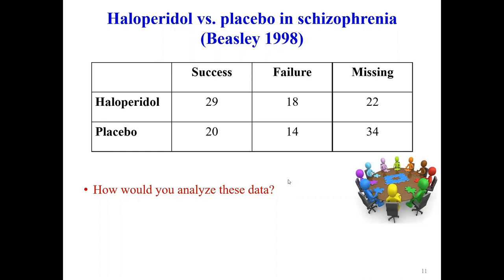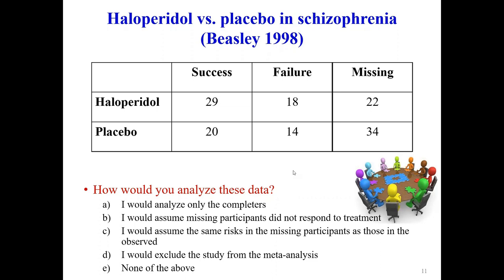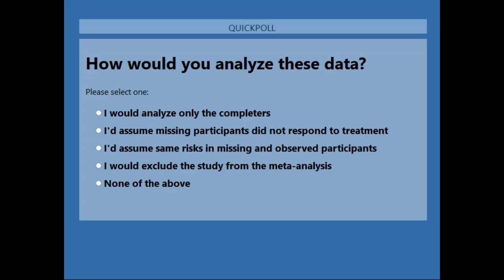Now we know it is most probably MNAR, but how would you analyze this data? Four choices: A — analyze only completers; B — assume missing participants did not respond to treatment (all missing are failures), so haloperidol has 18 plus 22 equals 40 failures; C — assume the same risks as observed in both groups; D — exclude the study from the meta-analysis. There is no single correct answer — we are more interested in your views.